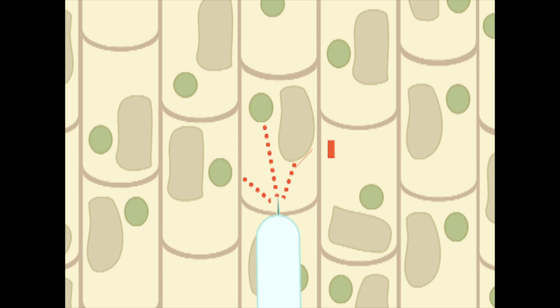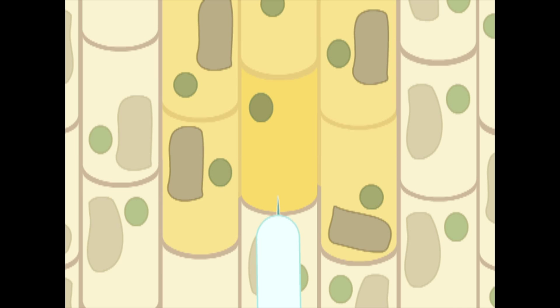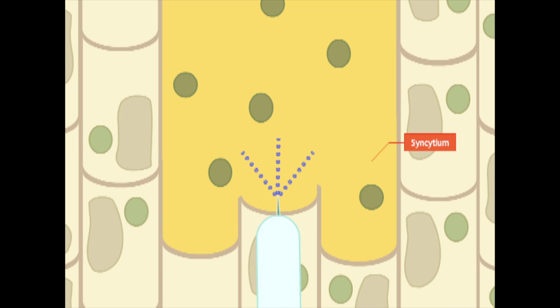The central vacuole is replaced with highly nutritious cytoplasm, and the walls of the neighboring cells are dissolved to form a single large feeding cell — the syncytium.